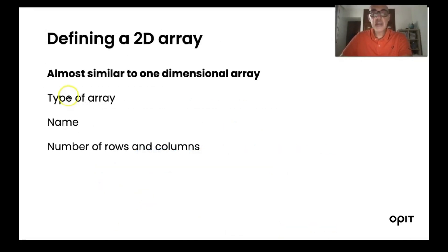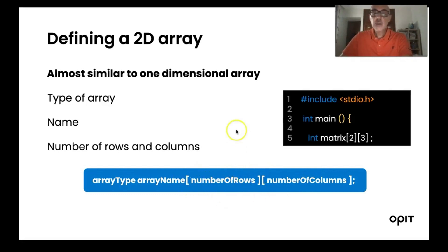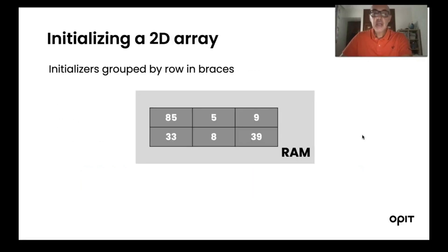As previously explained for the one-dimensional array, we specify the array type, the name of the array, and then we specify both the number of rows and the number of columns, each one given between brackets. For instance, here I'm defining a two-dimensional array called 'matrix' of type int having two rows and three columns.